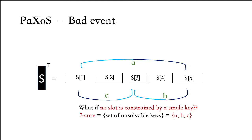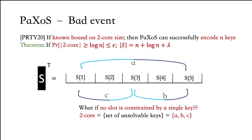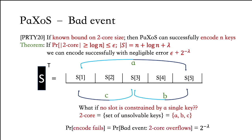In PRTY20, they show that if there is a known a priori bound on the size of the two-core, they describe a method to resolve it and successfully encode the n keys. The theorem is as follows: if the size of the two-core is greater than log n with less than ε probability, then they increase the size of the OKVS from n to n + log n + λ, and this allows them to encode n keys successfully except with negligible error. The only bad event during encoding is when the two-core overflows beyond the expected size of log n, and this happens with negligible probability.